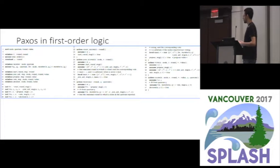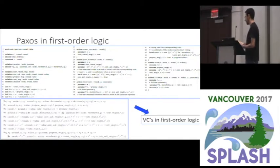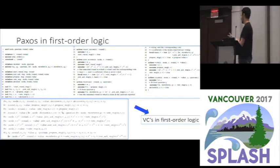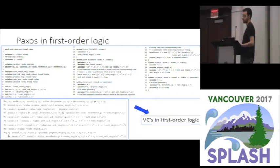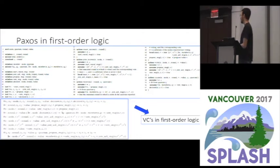After doing this, you can write a model of Paxos in first-order logic, write your invariant in first-order logic, and get verification conditions that are in first-order logic. But still, if you give them to an automated solver, it could succeed if you're lucky, but it could also diverge because it's still an undecidable problem. Our next step is to really dive into this undecidability and try to eliminate it to get to a decidable fragment.